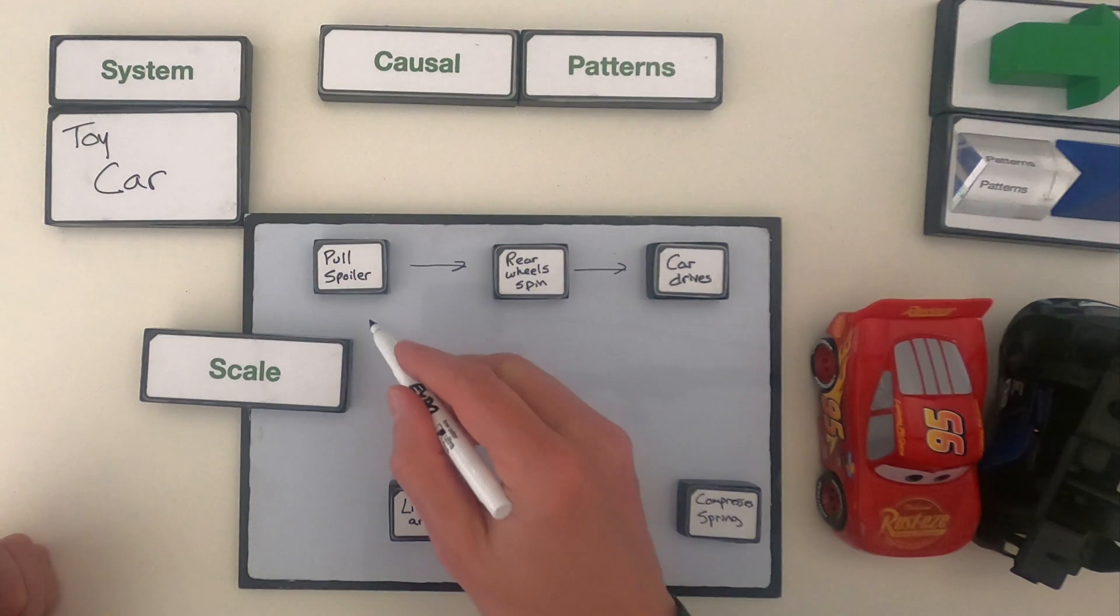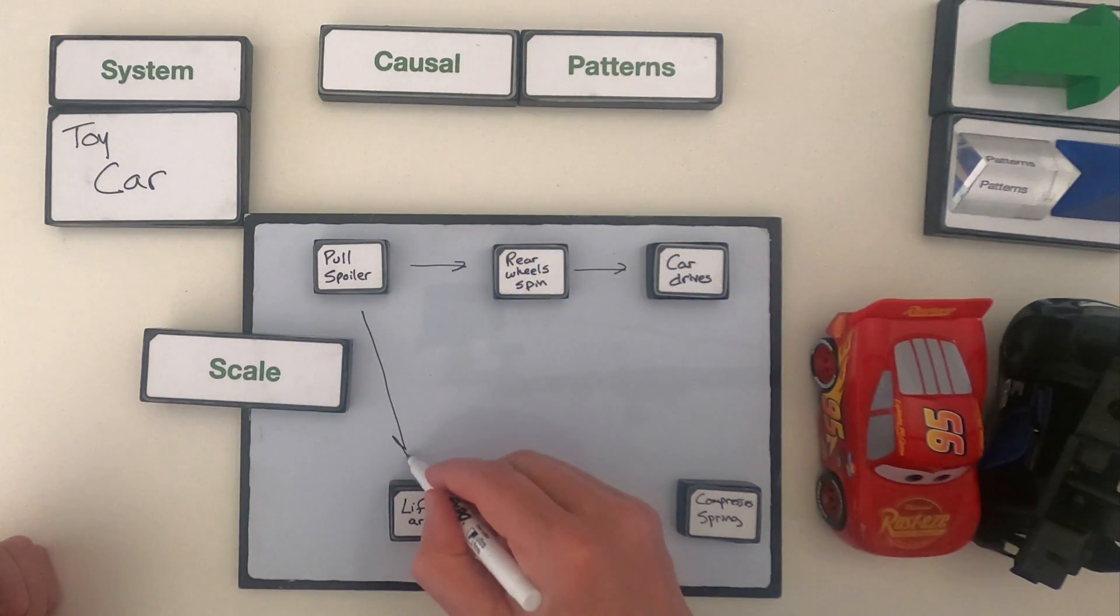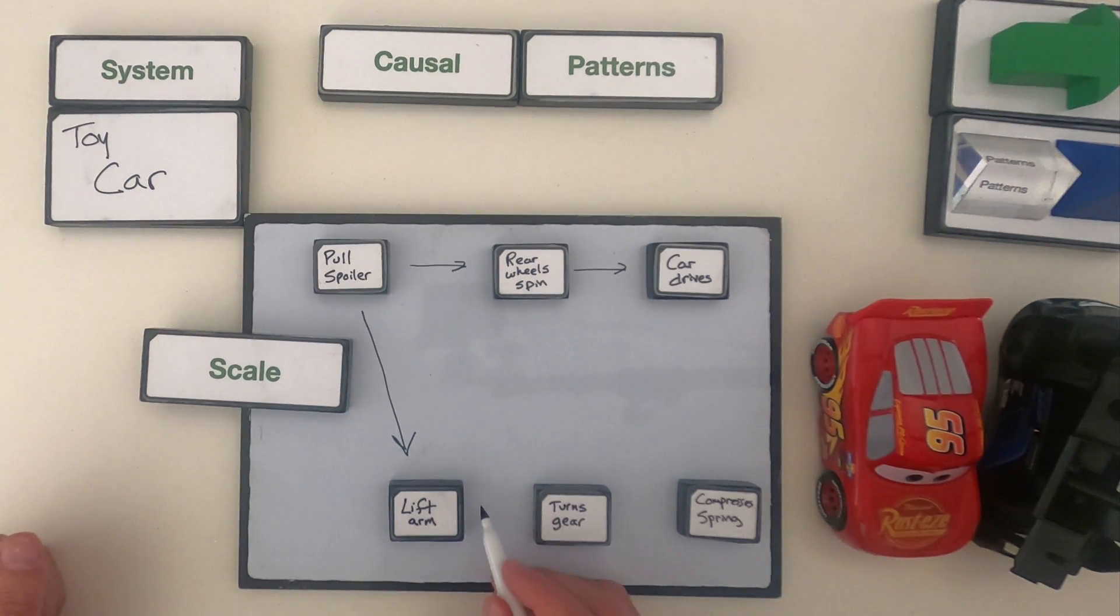So the first causal pattern I see is when you pull down on the spoiler, what you're really doing is lifting this arm. And that arm in turn turns the gear and that compresses the spring.